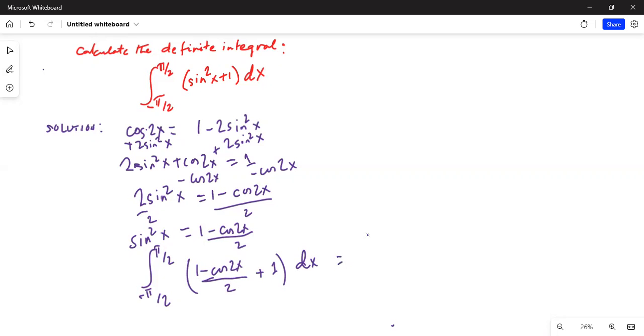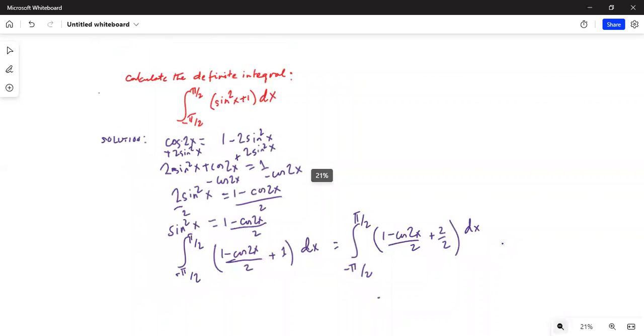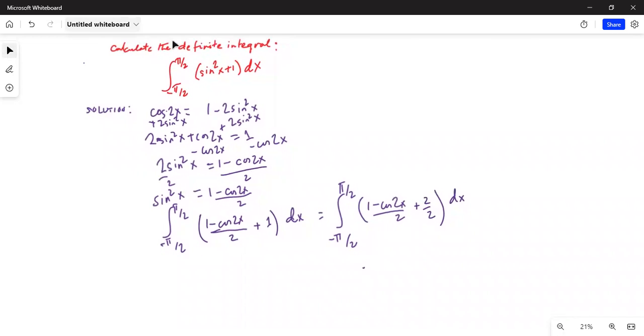So, I can simplify this by minus pi over 2 to positive pi over 2. And I can write this as 1 minus cosine 2x by 2 plus 2 over 2. 1 can be written as 2 over 2 dx. So, this becomes equal to minus pi over 2 to positive pi over 2. Now, 2 by 2 plus 1 by 2 is equal to 3 by 2, 2 minus cosine 2x, integration with respect to x dx.